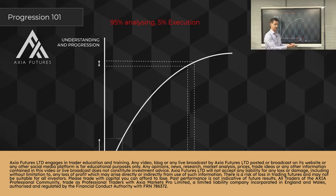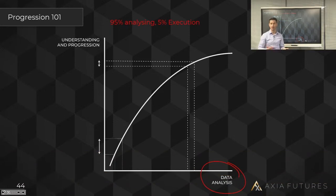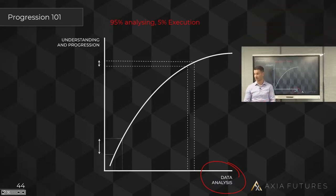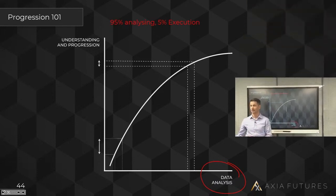We fail so that we can learn. We fail so that we can grow. We make a mistake, we learn, we implement a process that changes that mistake, and suddenly we get better as a result.